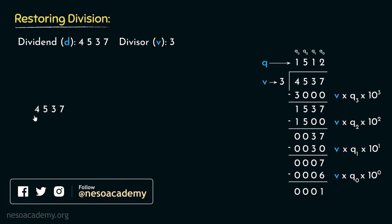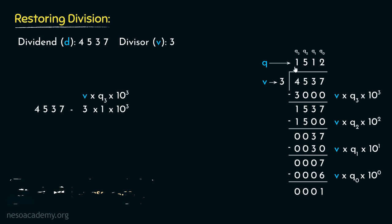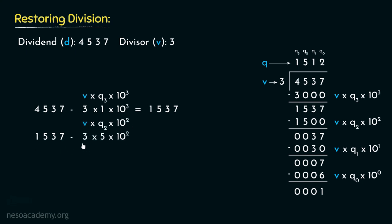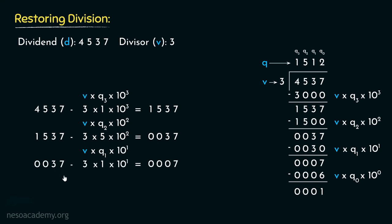Observe the pattern. We take dividend 4537 and subtract 3 into 1 into 10^3, which is 3000 (since the digit underneath Q3 is 1), giving us 1537. In the next iteration, we take 1537 and subtract 3 into 5 into 10^2, which is 1500, getting 0037 or 37. For the next iteration we take 37 and subtract 30, giving us 7. Finally, this subtraction gives the final remainder 1.